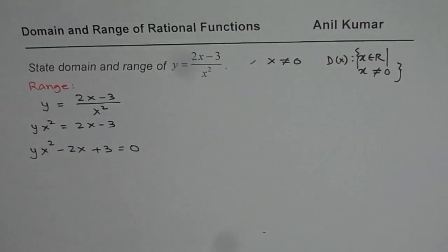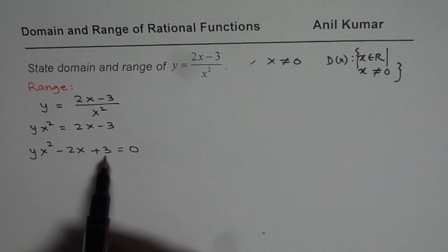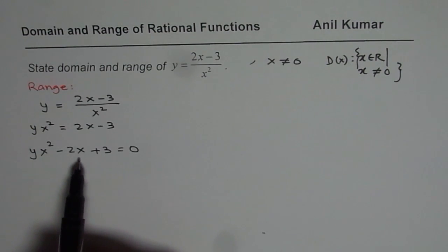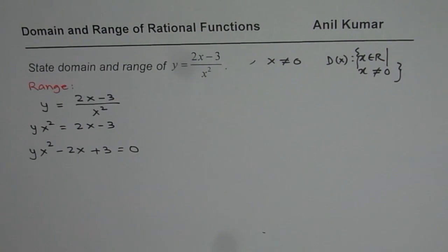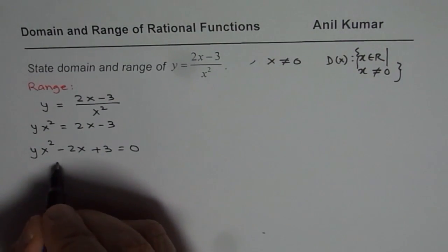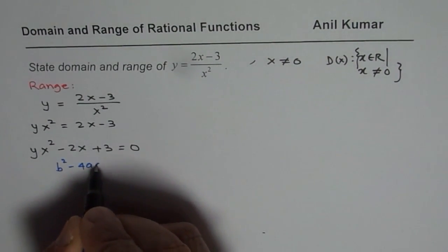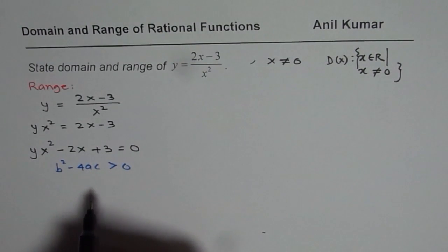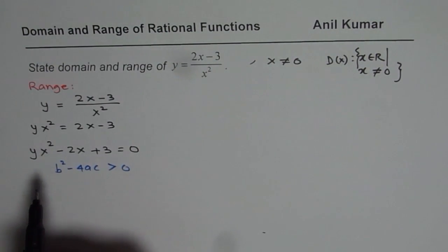Now we are saying that the function will have a real zero or a real solution if b² minus 4ac is greater than 0. So the idea here is that we need to set b² minus 4ac greater than 0 to get all the real solutions. That will give us the value of y.